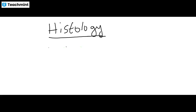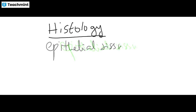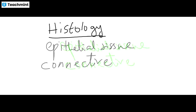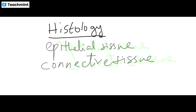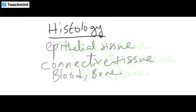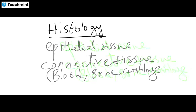First topic is epithelial tissues. Second topic is about connective tissue. Under connective tissue, we are involved with blood, bone, and cartilage. All these are included under connective tissue.